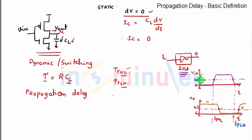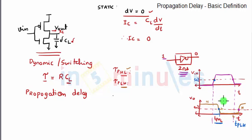Propagation delay high-to-low is the time delay between the 50% transition of the rising input voltage and the 50% transition of the falling output voltage. So basically, from the point where the input voltage is rising by 50% to the point where the output voltage is falling by 50% — that interval is my propagation delay high-to-low. Similarly, propagation delay low-to-high is the time delay when the input voltage transits from high to low at 50%, to the output voltage rising from low to high at 50%. The time difference for this to happen is propagation delay low-to-high.